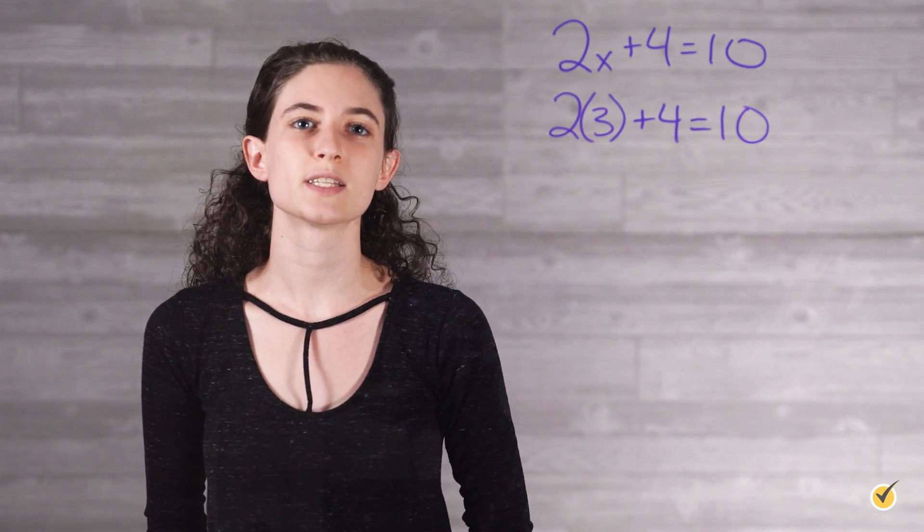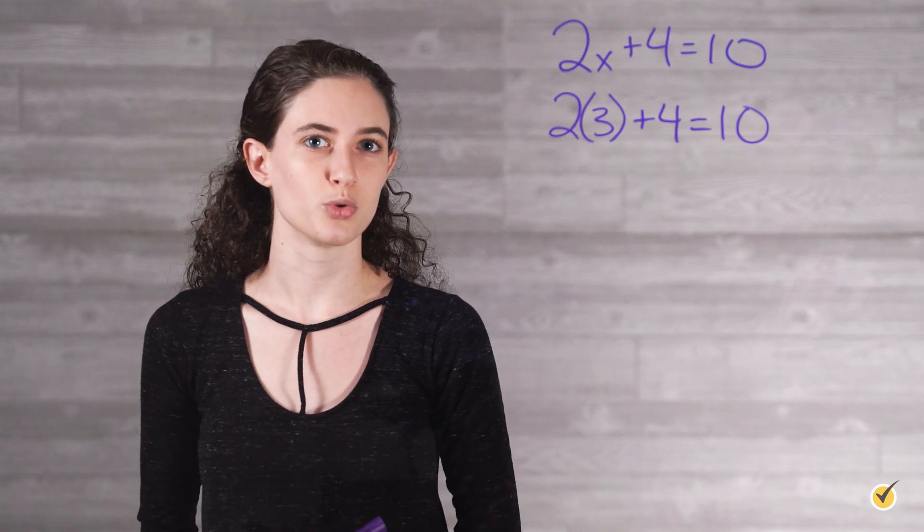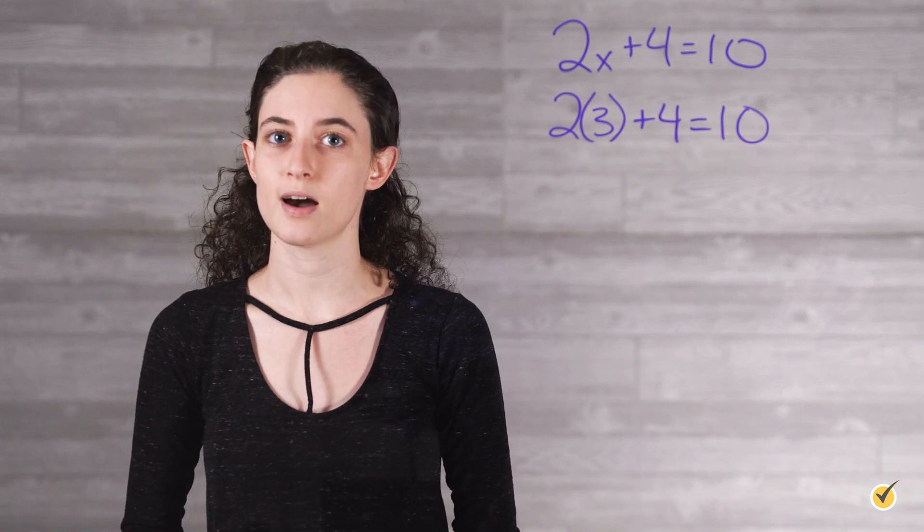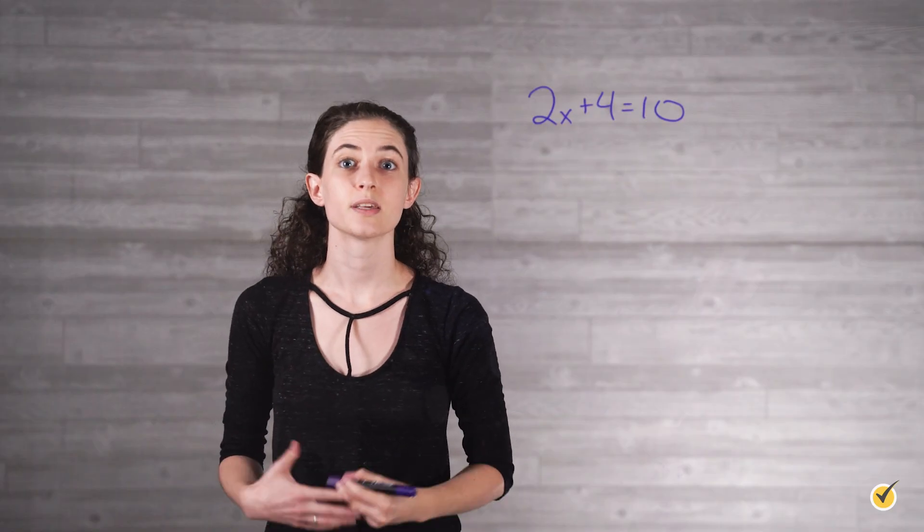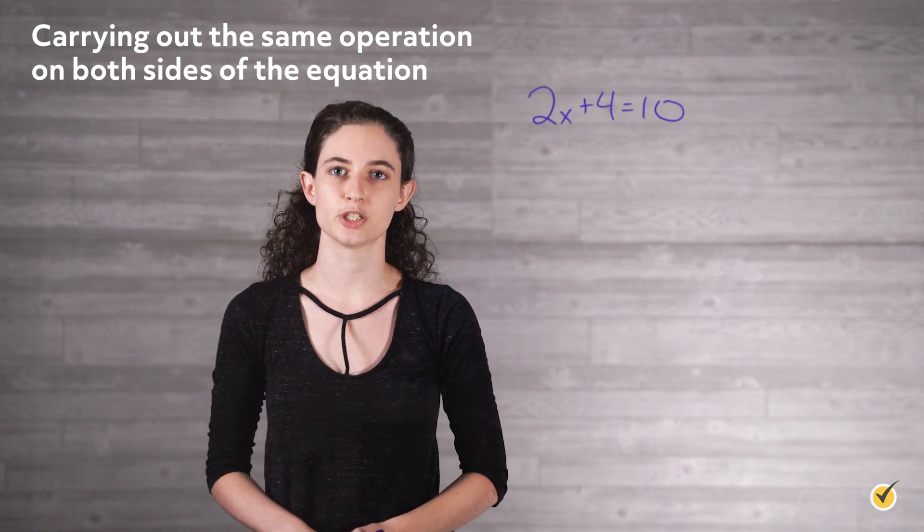For instance, if we tried to say that x equals 5, the left side of the equation would equal 14, and therefore not be equal to 10. Okay, now let's get into the first concept: carrying out the same operation on both sides of the equation.